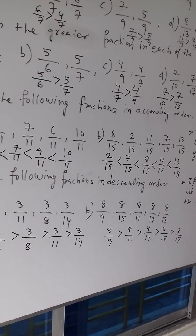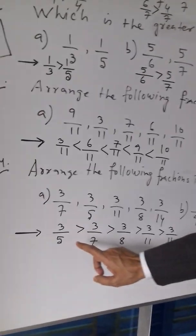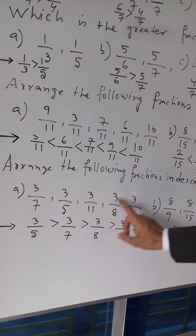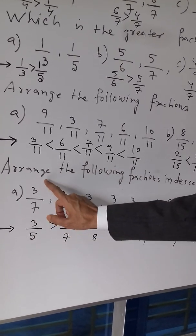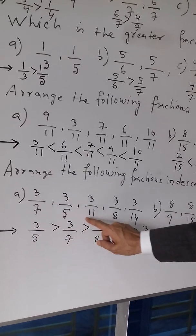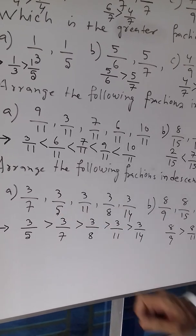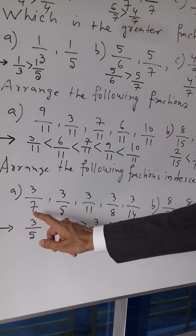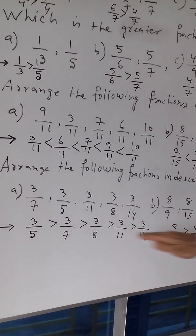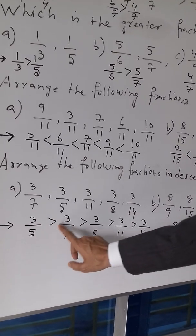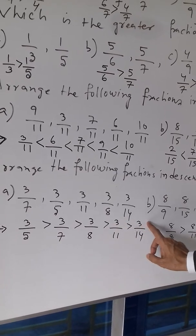Here, among 3 by 7, 3 by 5, 3 by 11, 3 by 8, and 3 by 14 — which denominator is the least? Certainly 5, then 7, then 8, then 11, then 14. So in descending order: 3 by 5 is greater than 3 by 7, greater than 3 by 8, greater than 3 by 11, greater than 3 by 14.